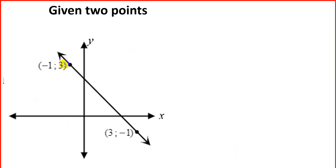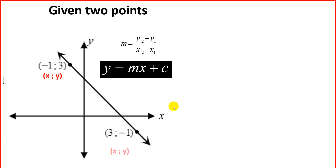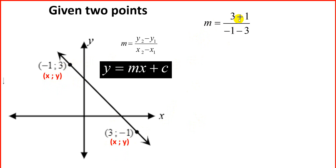We're now going to find the equation of a line given two points. Remember, the equation of a straight line is y equal to mx plus c. We have our gradient formula: y2 minus y1 over x2 minus x1. Starting with the gradient, we subtract the y values: 3 minus minus 1, which makes it 3 plus 1, over minus 1 minus 3. Using your calculator if needed, we get a gradient of negative 1.